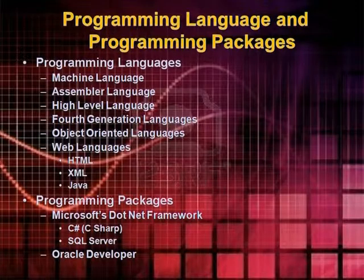The last thing we study today is programming languages and programming packages. All software has to be written in some computer language. We can start with machine language, which was the basic language in older times. Then in systematic order: after machine languages came assembly language, used at the mainframe. Then came high-level languages like COBOL and FORTRAN, which are still being used. Then fourth generation languages, object-oriented languages, and web languages such as HTML and Java.